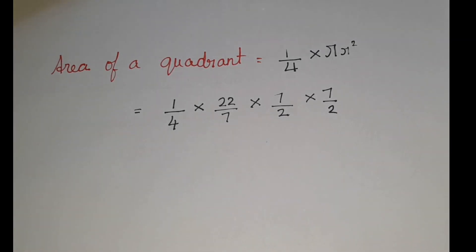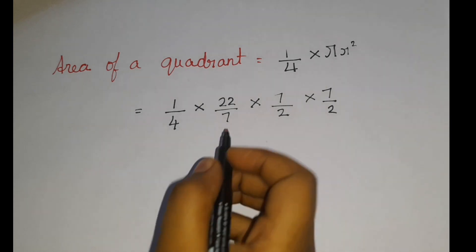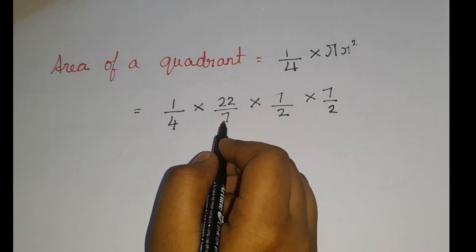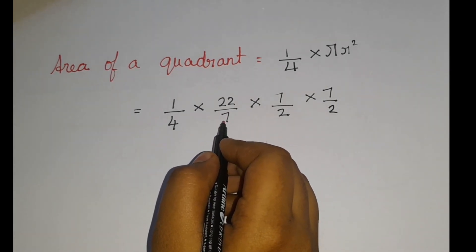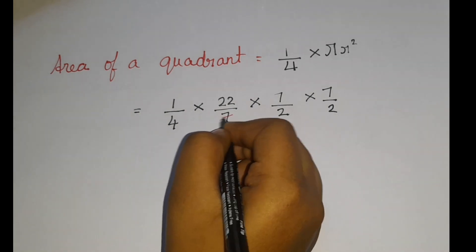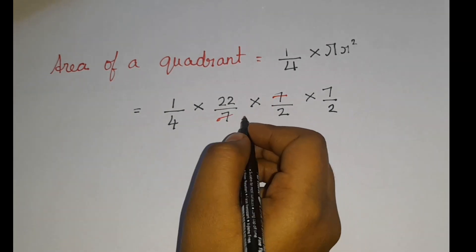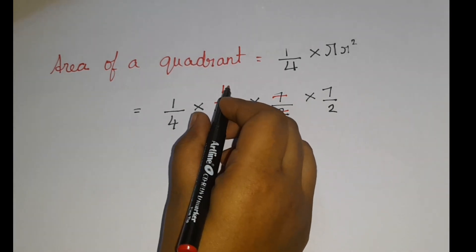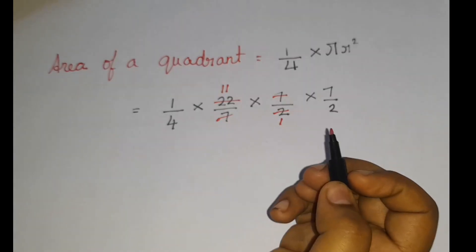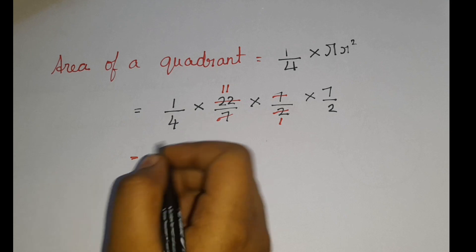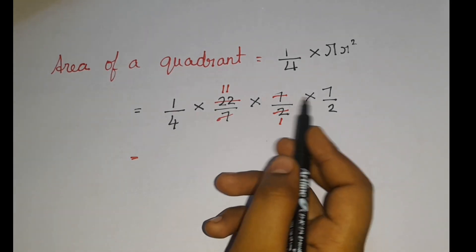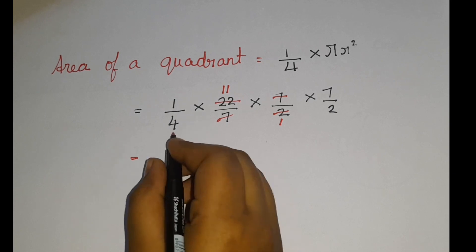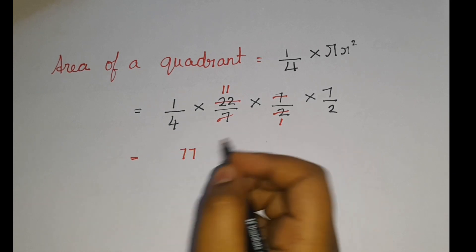Now let us cancel the values. I can cancel this 7 and this 7, and I can cancel this 2: 2 and 2. So 11 × 7 is 77, and 4 × 2 is 8.